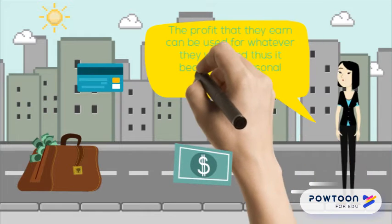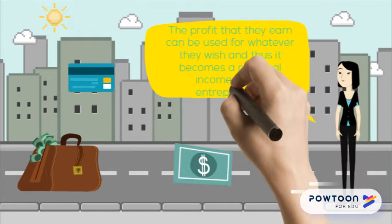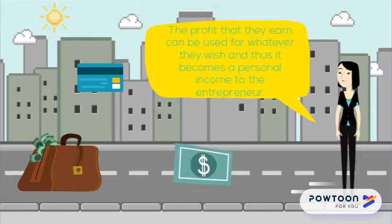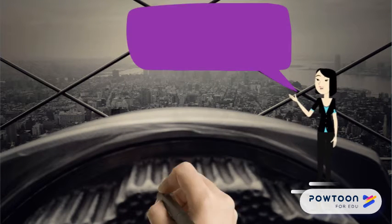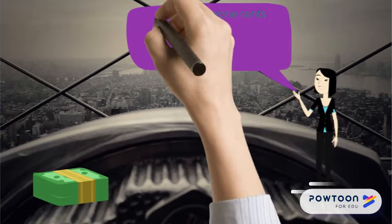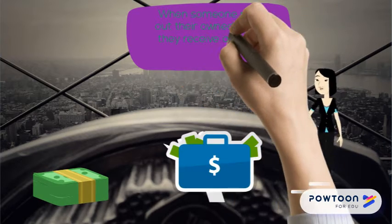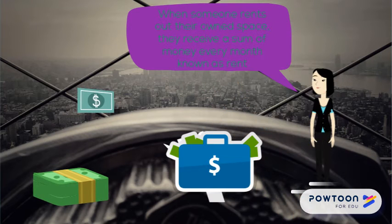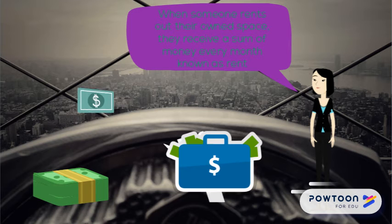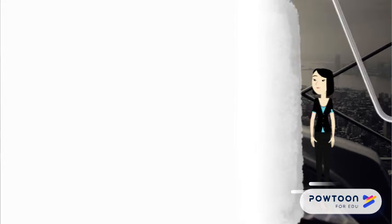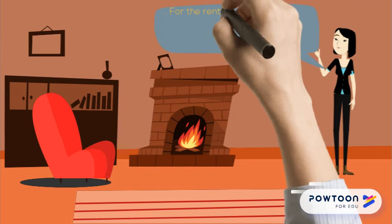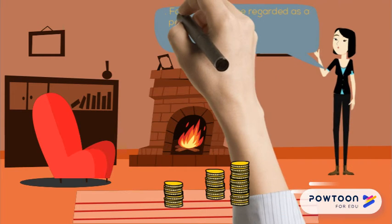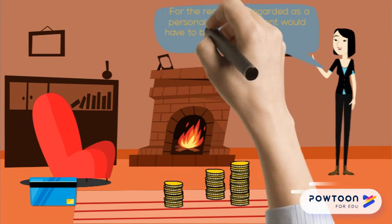Rent from living space or other forms of property may be rented out for many different reasons. They may rent out homes, offices, buildings, and even land. When someone rents out their own space, they receive a sum of money every month known as rent. This is a personal income for the person actually owning the property. People that rent out the space are regarded as tenants. For the rent to be regarded as a personal income, the rent would have to be higher than owning the house in order to make a profit.